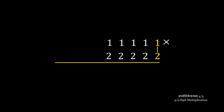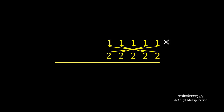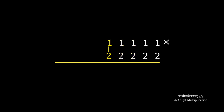Now, can we do this with 5 digits? Yes, of course we can. The first partial product is a multiplication of the final two digits, then a cross-multiplication of the final two digits, then a cross-multiplication of the last three digits, then four, then a cross-multiplication of all the digits, then a cross-multiplication of the first four digits, then a cross-multiplication of the first three digits, then a cross-multiplication of the first two digits, and finally a product of the first digits. Let's look at an example.